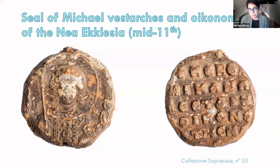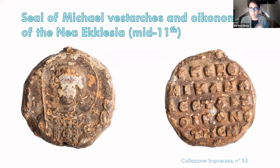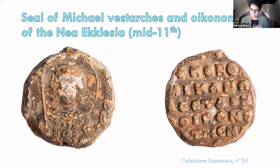Just to show how a Byzantine seal looks like: we have on the obverse an iconography, and on the reverse we have a legend in this case. But it might be that on both sides we have an iconography. We can also have a legend, a monogram, or a monogram and a legend — so it is very varying.